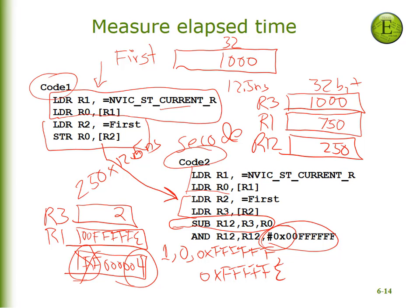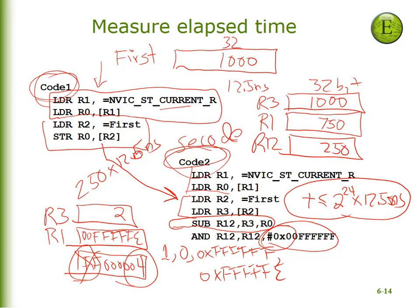All is fine as long as the total time measured is less than 2 to the 24th times 12.5 nanoseconds, which will be correct in this particular lab — every time we measure a time difference it will be less than this upper bound. That's a brief introduction to how we're going to use SysTick in this lab. There's lots more fun stuff about SysTick that we'll use in the next lab, but these are the only things you really need to know to do lab 4. Good luck and have fun.